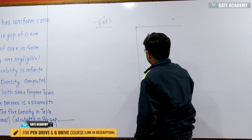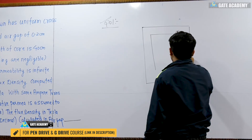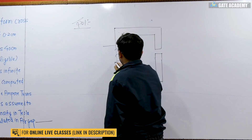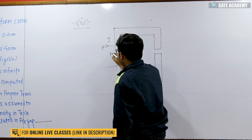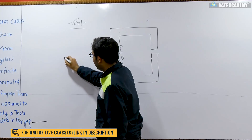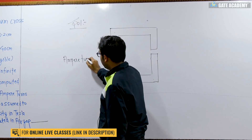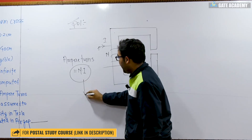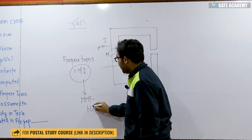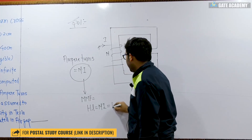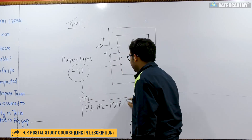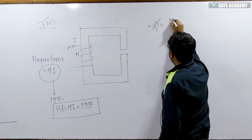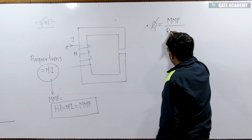Suppose we have a transformer, and in between there is an air gap in the core. When current flows through the winding having number of turns N, this is called ampere turns. Ampere turns equals N into I. This is also called MMF in terms of numerical, so generally we say H·L = N·I. In a magnetic circuit, flux equals MMF upon reluctance. This is the basic relation in a magnetic circuit.